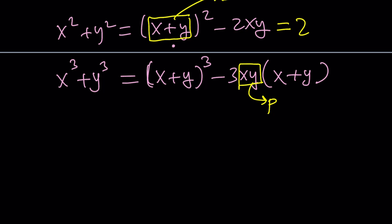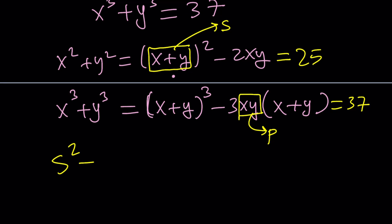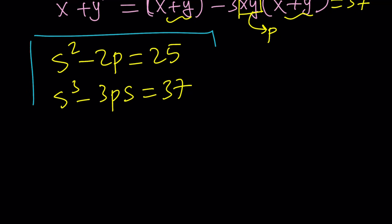So from here, the sum of squares is 25. And this is 37. I get the following: s squared minus 2p. And from here, I get s cubed minus 3ps equals 37. This is beautiful because this system can be solved. We have two variables, but much, much nicer. It's not like sum of powers. It's more like two polynomials. And we can use substitution. This was kind of a cubic system in p and s.